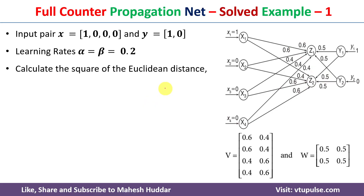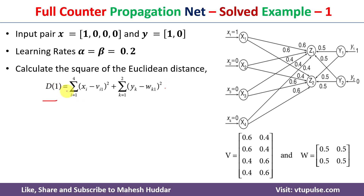We need to calculate the squared Euclidean distance using this formula, and then calculate the distance of this input pair to the cluster units. Based on the distance we can map the input pairs to one of the clusters. The formula for d1 is: summation from i equals 1 to 4 (because there are four components in x) of (xi minus v_i1) squared, plus summation from k equals 1 to 2 (because there are two components in y) of (yk minus w_k1) squared.